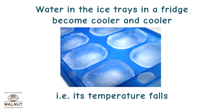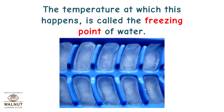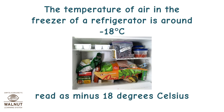Water in the ice trays in a fridge becomes cooler and cooler — that is, its temperature falls. At a certain temperature, water does not get cooler anymore but starts freezing and forms ice. The temperature at which this happens is called the freezing point of water. The freezing point of water is 0 degrees Celsius. The temperature of air in the freezer of a refrigerator is around minus 18 degrees Celsius.